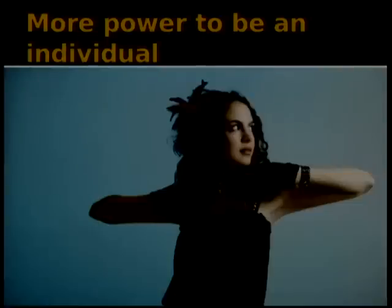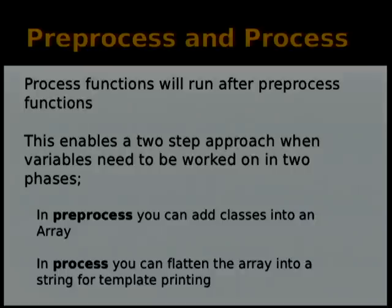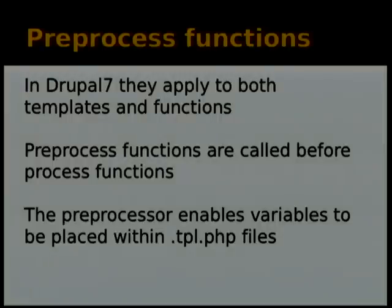Drupal 7 gives us more power to be individual with our themes. We've had pre-process functions for a while, and now we also have process functions that occur at the theme level. Process functions run after the pre-process function, enabling a two-step approach: in pre-process you can add classes to an array, then use a process function to flatten that into a string and pull it into your template.